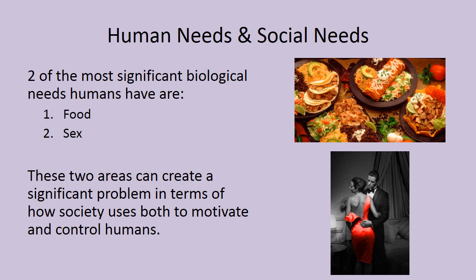Two of the most significant biological needs people have are food and sex. Food is one of our basic physiological needs, and while you can live without sex, it's a social need that often gets us into situations. These two areas can create significant problems in terms of how society uses both to motivate and control humans. You're sitting watching TV and a commercial shows dessert, pizza, or ice cream, and all of a sudden you're starving. Or there's an ad involving sexuality, and suddenly you're not interested in the TV show. These things coalesce in our minds to motivate us, and not always for the better.